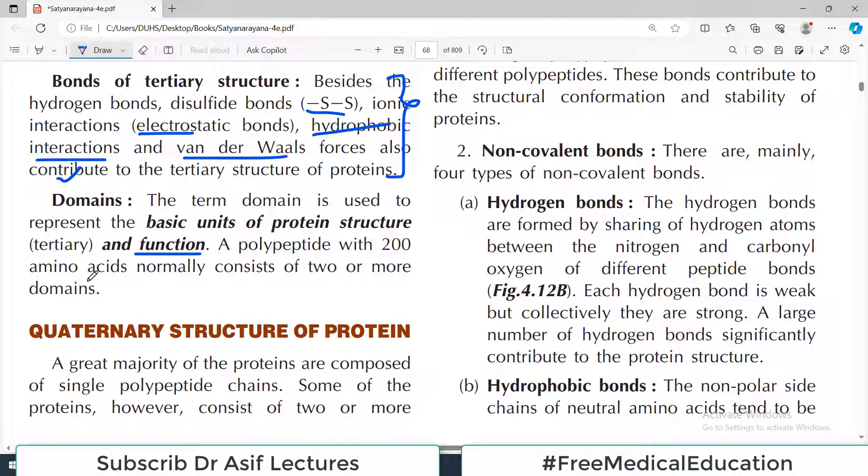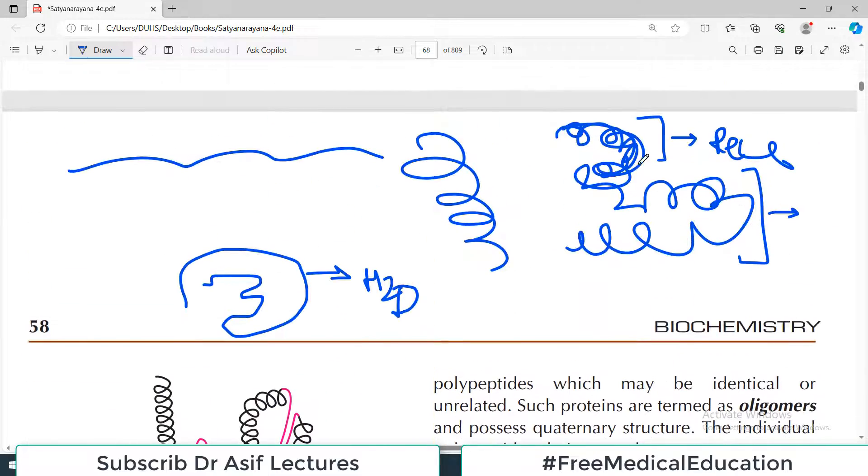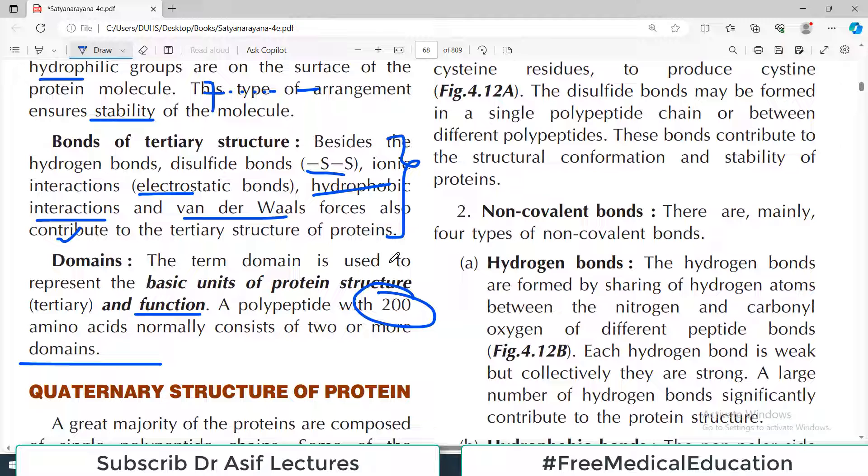A polypeptide with 200 amino acids normally consists of two or more domains. Obviously, if it's a long protein molecule, there will be different portions. There will be a portion which binds to receptor, there will be a portion which activates or deactivates an enzyme. So it's a general rule - if we have more than 200 amino acids, then there are multiple domains, at least two domains of that particular protein.